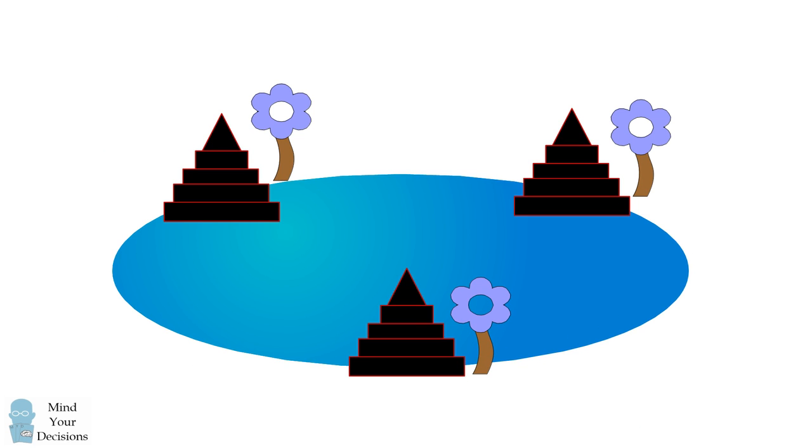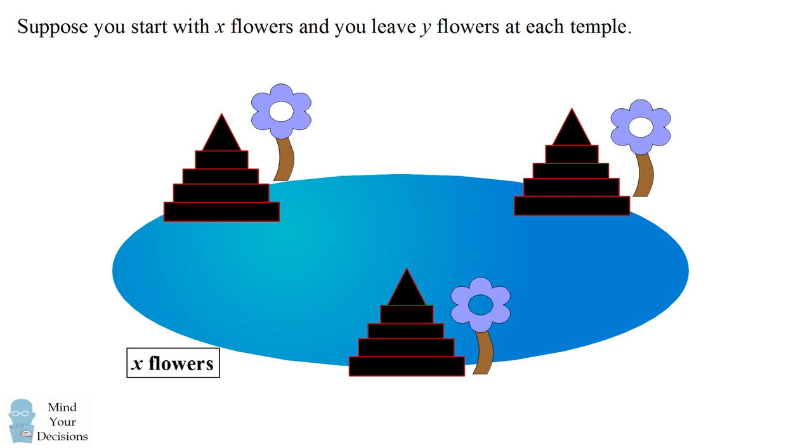We will solve the problem algebraically. Imagine you start with x flowers and you leave y flowers at each temple. Let's keep track of how many flowers you have at each part of the trip. You start out with x flowers. When you swim in the pond, the number of flowers you have triples to 3x. You then leave y flowers at the first temple, which leaves you with 3x minus y flowers.